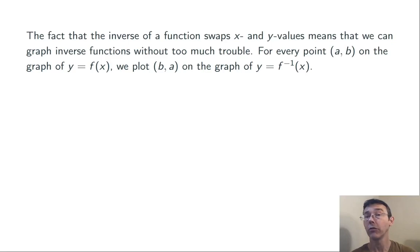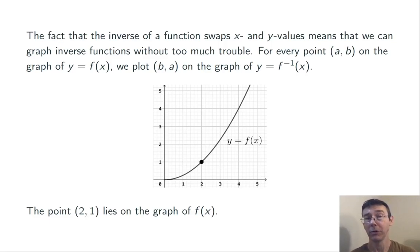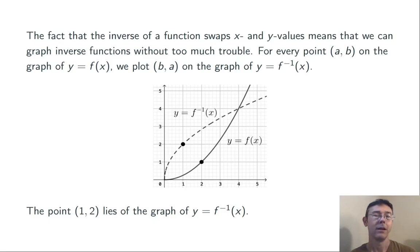Using that knowledge, we can construct graphs of inverse functions fairly easily. Whenever we have a point a comma b on the graph of y equals f of x, we have a point b comma a on the graph of y equals f inverse of x. For example, here's a graph of a function that passes through two comma one — the inverse function is going to pass through one comma two. Additionally, this graph passes through four comma four; swapping those inputs and outputs, the graph of f inverse also passes through four comma four. Plotting a few more points and connecting the dots in a smooth way, we get a graph like this for y equals f inverse of x. The net effect is a reflection across the line y equals x.